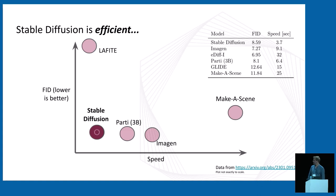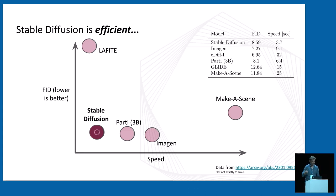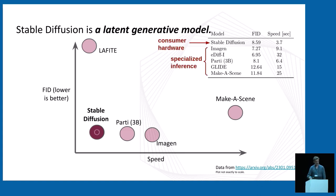One remarkable feature about Stable Diffusion is its efficiency. It achieves similar image quality as other large-scale text-image models — for example, Parti and Imagen published by Google, and Make-a-Scene from Meta. The FID score on the Y-axis is a standard metric to evaluate image synthesis quality, and lower is better. Stable Diffusion really strikes a balance between quality and sampling speed, and in addition it can be run on consumer-type hardware, some very old GPUs used for gaming. One reason for this is that Stable Diffusion is a latent generative model — specifically, a latent diffusion model.